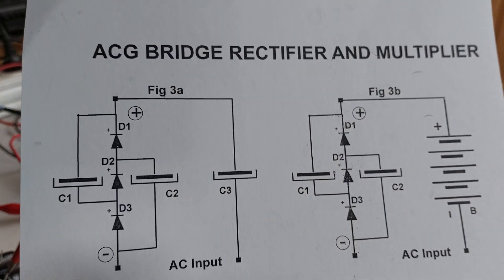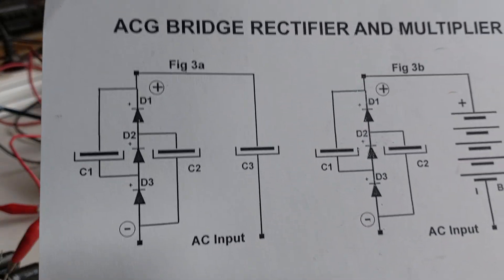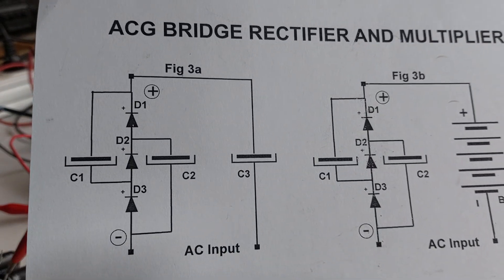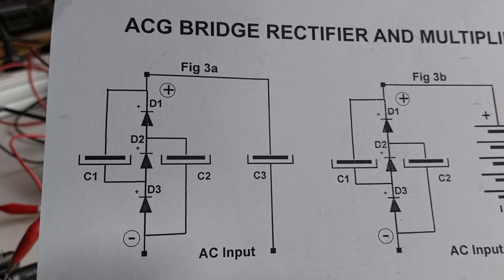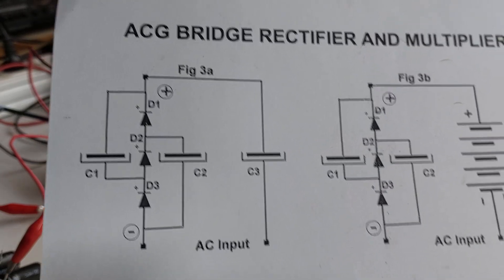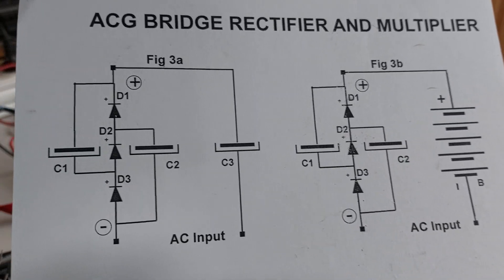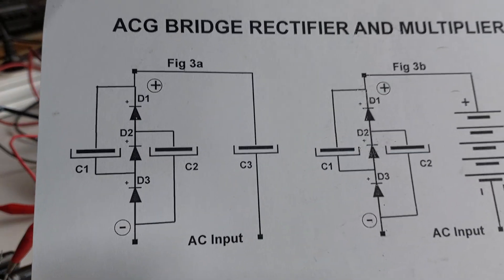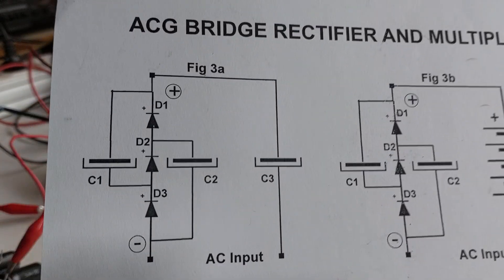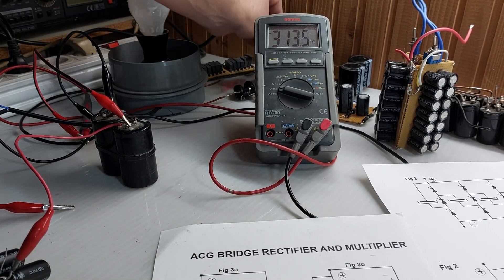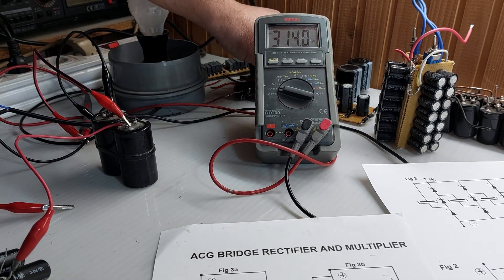ACG could use a voltage divider — divide by two, by three, or any number. If it's divide by two, then capacitor C3 will give one amount of charge and receive four back, so three is extra. With divide by three, it gives one amount and receives back nine, so eight is extra. So we have ACG with two, with three, with four, with seven, and so on.